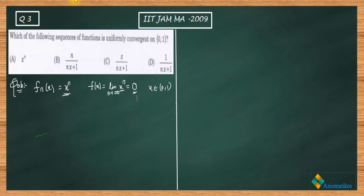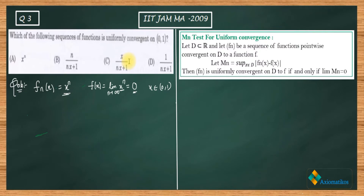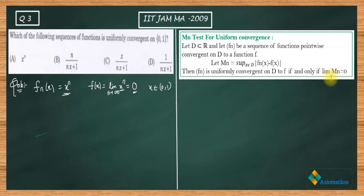Let me show you the M_n test. It states: if D is a subset of R (D represents the domain) and f_n is a sequence of functions pointwise convergent on D, then M_n is defined as the supremum of |f_n(x) − f(x)| over x in D. Then f_n is uniformly convergent on D to f if and only if the limit of M_n goes to 0.